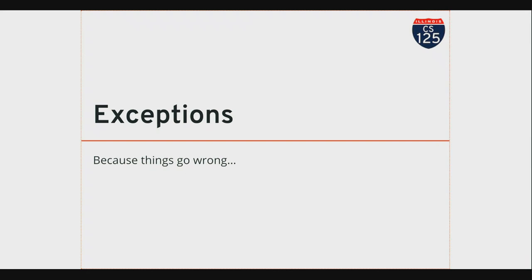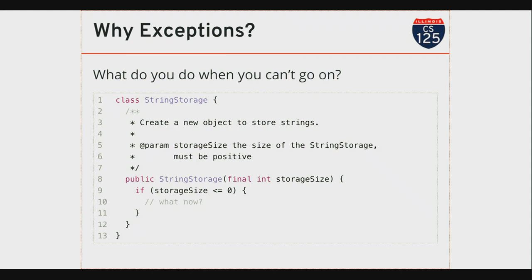What do you do when your program encounters some sort of unexpected situation — an error, an unexpected condition — what do you do when things go wrong? We've seen a couple of these scenarios before and haven't known what to do. If the user passes a bad argument to my constructor, there's no good answer. I'm creating a class to store things, you give me a negative argument — there's no way in Java to prevent that, because ints can be both positive and negative. How am I supposed to interpret that? Up until this point, there's really been no good answer.